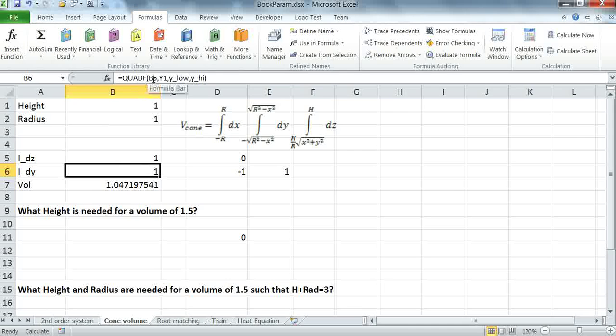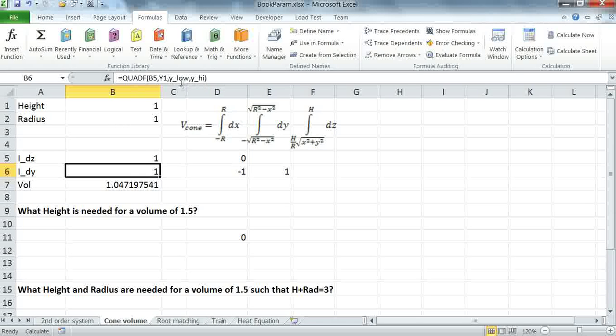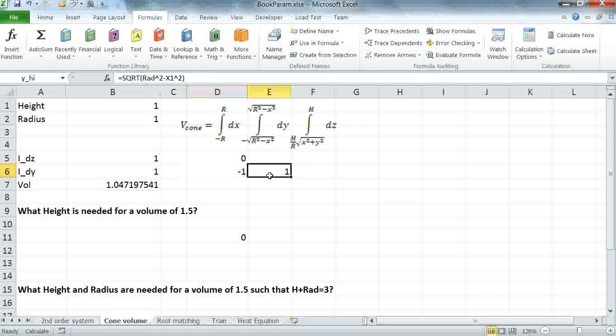As you can see, the integrand here is B5. And the variable of integration again is Y1. And the limits go from Y-low to Y-high, which are defined in these formulas.